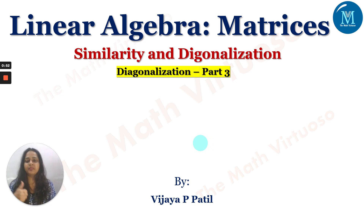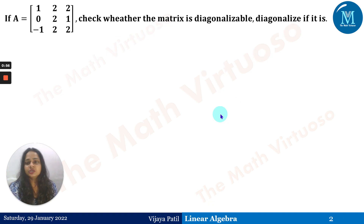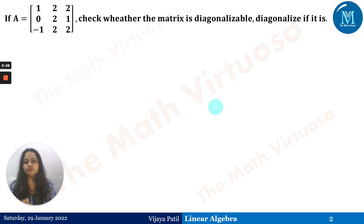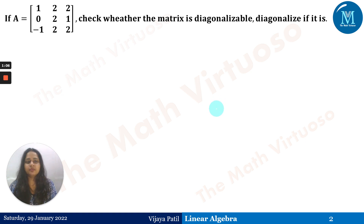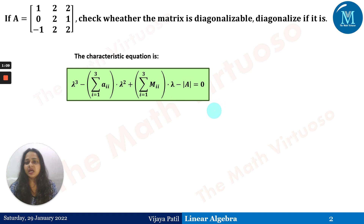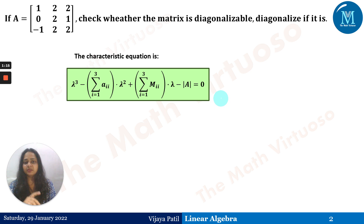Matrix A is given as a 3×3 matrix: [1, 2, 2; 0, 2, 1; -1, 2, 2]. We need to check whether the matrix is diagonalizable, and diagonalize it if it is. To do this, we need to find the eigenvalues and eigenvectors.